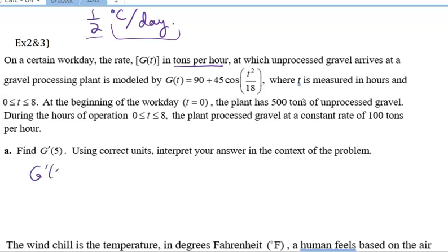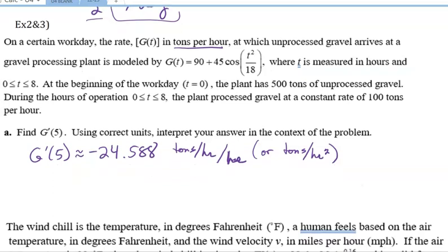So G, full statement, G prime of 5 is approximately equal to negative 24.588. And so now let's think about our unit. So this is a rate of change of G, and G is in tons per hour. So this is tons per hour. It's a rate of change of G over some amount of time. So over hours, over hours again. So it's tons per hour per hour, or we could say tons per hour squared. Both of those are fine. But it's not tons per hour, because that would just be a change in G. But we're doing a change in G over time, specifically at time 5. So there's our correct units and our values.